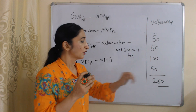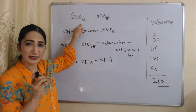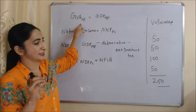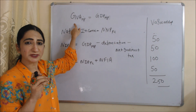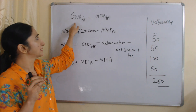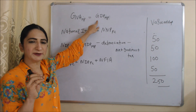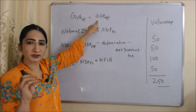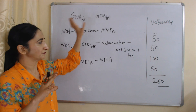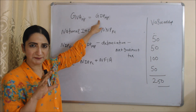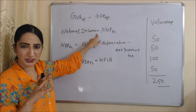This 250 rupees is equal to GVA at MP, which means Gross Value Added at Market Price. GVA at MP is equal to GDP at MP, which means Gross Domestic Product at Market Price — these two are equal to each other.